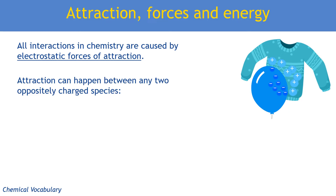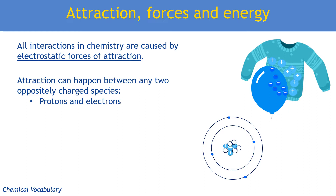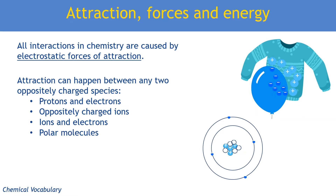It's any oppositely charged species. We could be talking about the protons in the nucleus being attracted to electrons — normally the outer electrons in chemistry, because those are the things that are lost, gained, and shared in chemical reactions. Ionic bonding is the attraction between oppositely charged ions, metallic bonding is between ions and electrons, and even intermolecular forces are always caused by some sort of electrostatic force of attraction.